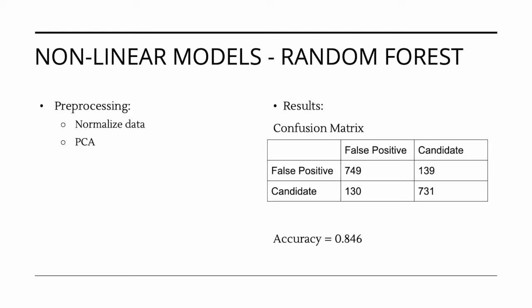Our final nonlinear model was Random Forest, utilizing principal component analysis. Prior to model implementation, we made sure to normalize the data. We then performed principal component analysis and transformed our predictor variables. This was then fed into a Random Forest model with no further hyperparameter tuning. This resulted in our best performing nonlinear model with an accuracy of 0.846.